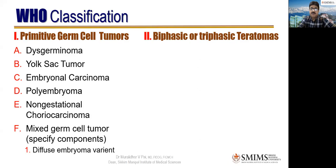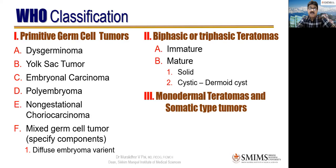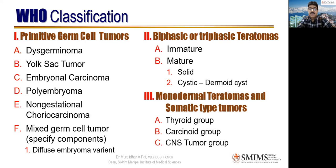Then we have biphasic or triphasic teratomas — two or three types of cells the germ cell differentiates into. First is immature: an attempt to become mature but not really differentiated. Then mature variety, either solid or cystic — cystic being the commonest, the dermoid cyst, where all three cell lines, ectoderm, endoderm, and mesoderm, can be seen. The third main category is monodermal teratomas and somatic-type tumors, where one cell line only is differentiated: thyroid, carcinoid, CNS tumor, or carcinoma.